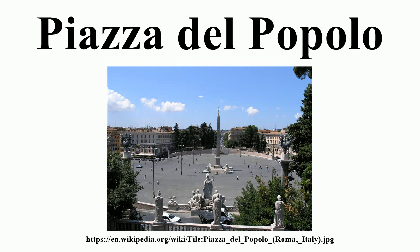An Egyptian obelisk of Seti I from Heliopolis stands in the center of the piazza. Three sides of the obelisk were carved during the reign of Seti I and the fourth side under Rameses II. The obelisk, known as the Flaminio obelisk or the Popolo obelisk, is the second oldest and one of the tallest obelisks in Rome. It was brought to Rome in 10 BC by order of Augustus and originally set up in the Circus Maximus, then re-erected here by architect-engineer Domenico Fontana in 1589 as part of the urban plan of Sixtus V. The piazza also formerly contained a central fountain, which was moved to the Piazza Nicosia in 1818, when fountains in the form of Egyptian-style lions were added around the base of the obelisk.